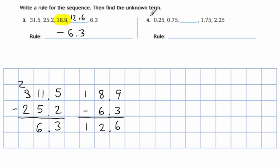Here's problem number four. We have 0.25, 0.75, a blank, then 1.75, then 2.25. And in this case, each number is getting larger. So the first part of our rule is we're going to be adding. All right, so we've taken care of number one.